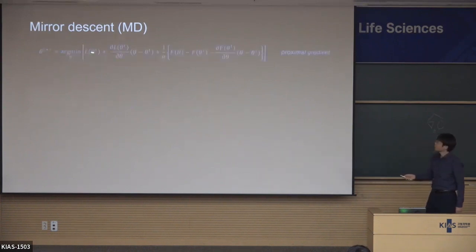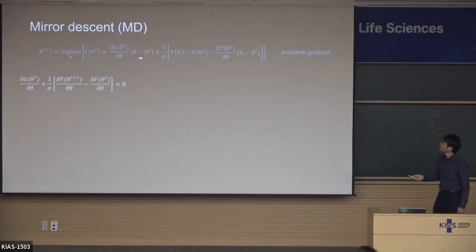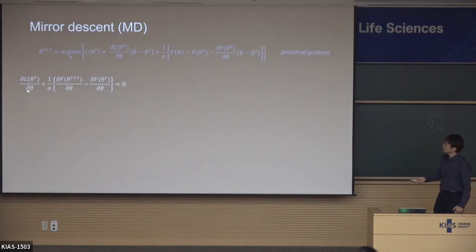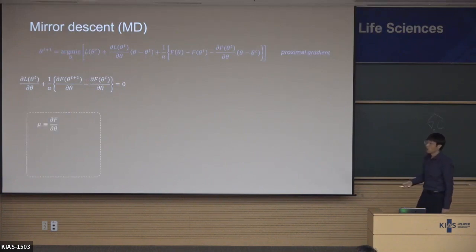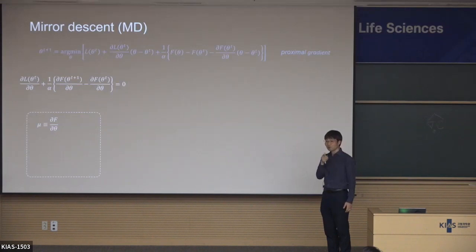Instead of the Euclidean distance, we plug this Bregman divergence in. This first term is the loss function — or rather first-order Taylor expansion — and this second term is the proximity with Bregman divergence. We want to optimize this with respect to theta. Just differentiate this equation with respect to theta. Here theta_t is just a constant. Then you get this equation.